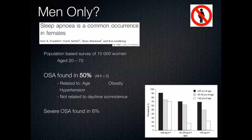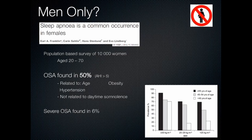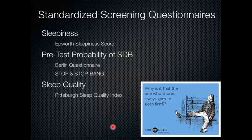Is sleep apnea confined to men? Definitely not. A large population-based survey of 10,000 women aged 20 to 70 found that 50 percent had obstructive sleep apnea. Prevalence was related to age, obesity and BMI, and presence of hypertension — interestingly, not specifically related to daytime somnolence. The graph clearly shows that as BMI increased, prevalence of sleep apnea increased, particularly with age. If you had a BMI over 30 and were over 55 years old, there was a very high prevalence of obstructive sleep apnea.